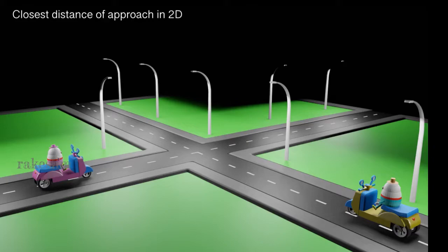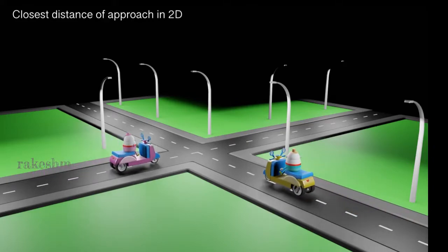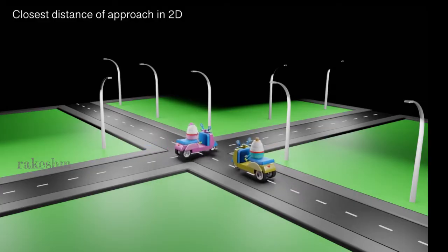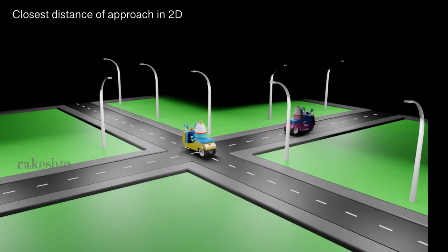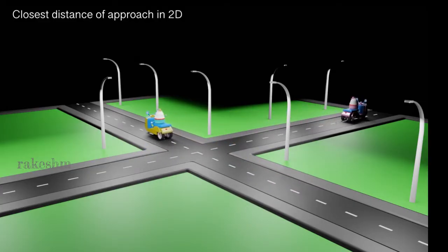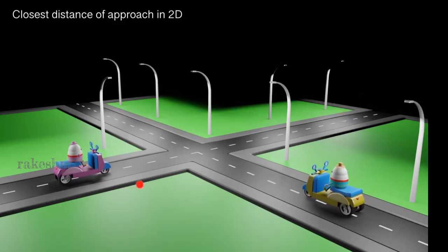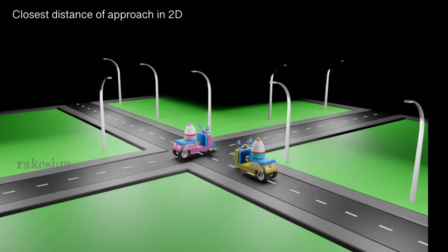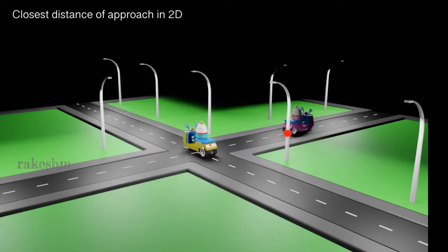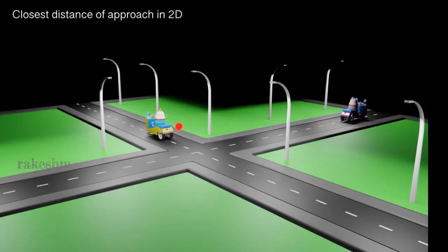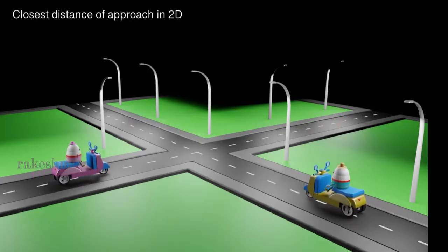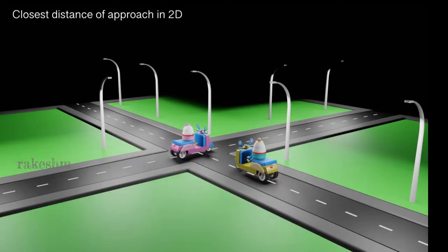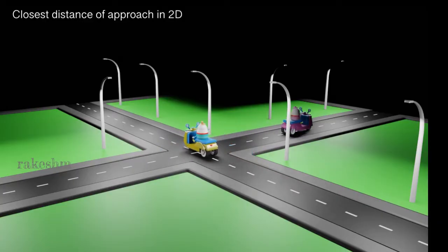Let us have a look at the schematic. You can see the distance between them is decreasing with time and then it starts to increase again. So there is one point at which they are at the closest distance, and we need to find that closest distance.